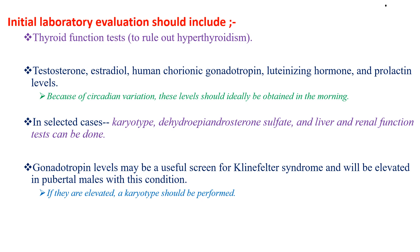In selected cases, karyotype, dehydroepiandrosterone sulfate, and liver and renal function tests can be performed. Gonadotropin levels may be used to screen for Klinefelter syndrome and will be elevated in pubertal males with Klinefelter syndrome; if elevated, a karyotype should be performed to confirm the diagnosis.